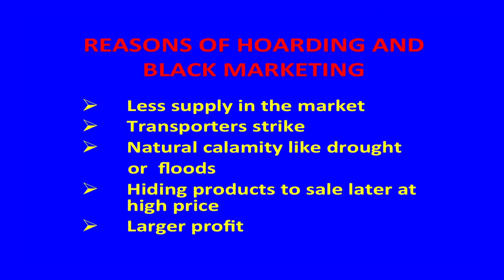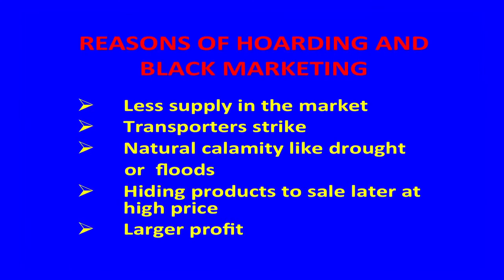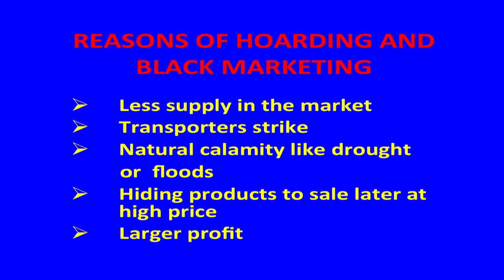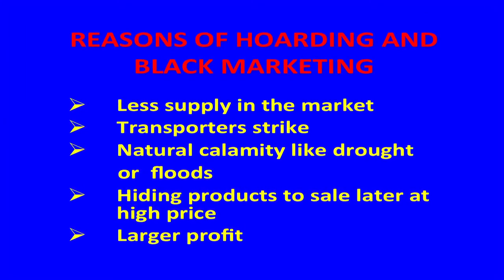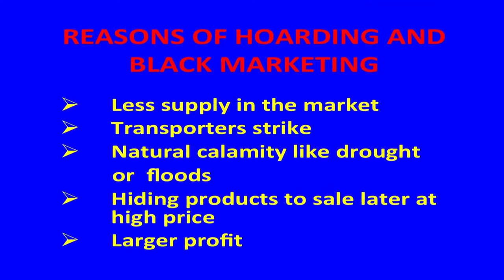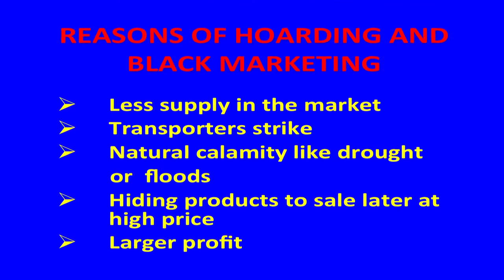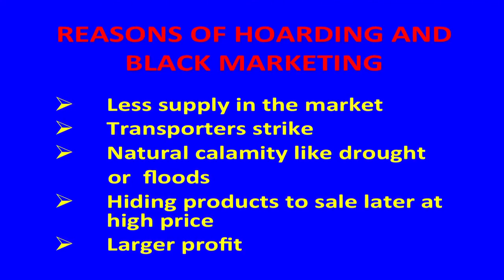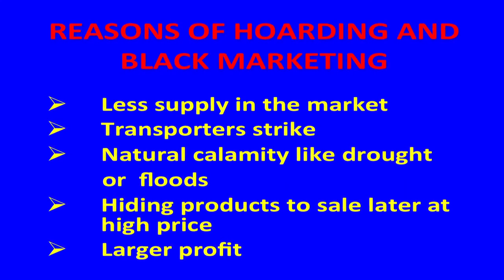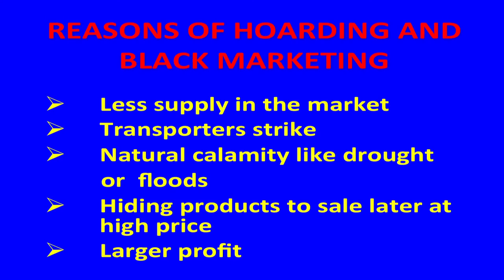There can be genuine reasons for non-availability of products — low production, less supply in the market, transport strikes, and natural calamities like drought or floods. There can also be intended reasons for non-availability backed by the profit interest of the seller, such as hiding products for sale in future at a high price, and black marketing where products are available at some other location or vendor at a much higher price. Examples are onion and potato.